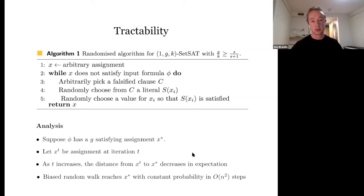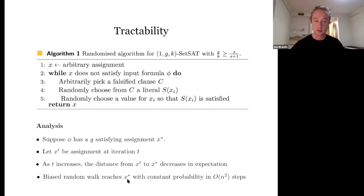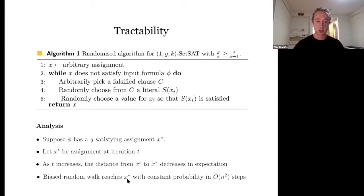Essentially we have a biased random walk which reaches assignment X-star with constant probability in order N-squared steps. Not only does it find a one-satisfying assignment, it actually finds the G-satisfying assignment X-star — something that appears often in promise CSPs. When showing tractability, you show it for the search problem, which is at least as hard as the decision problem. When showing hardness, you show it for the decision problem. It's not known in general when the two are equivalent.